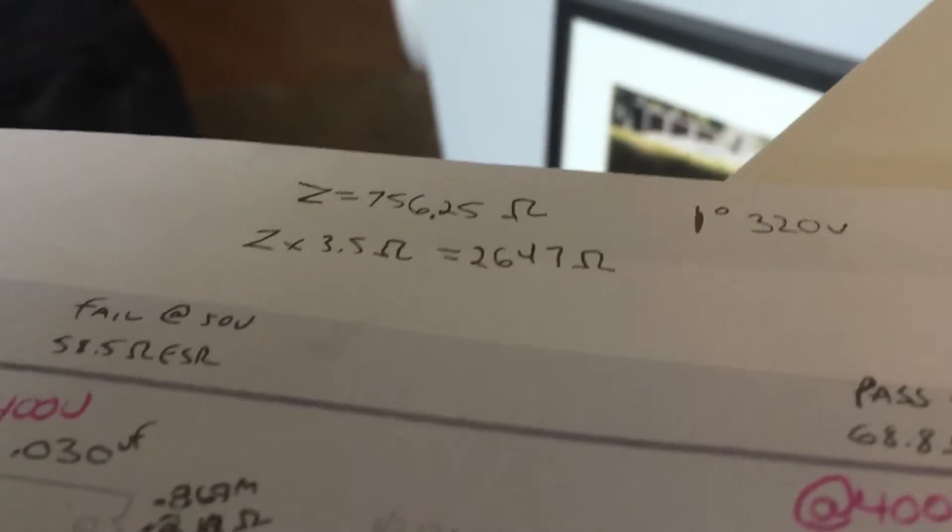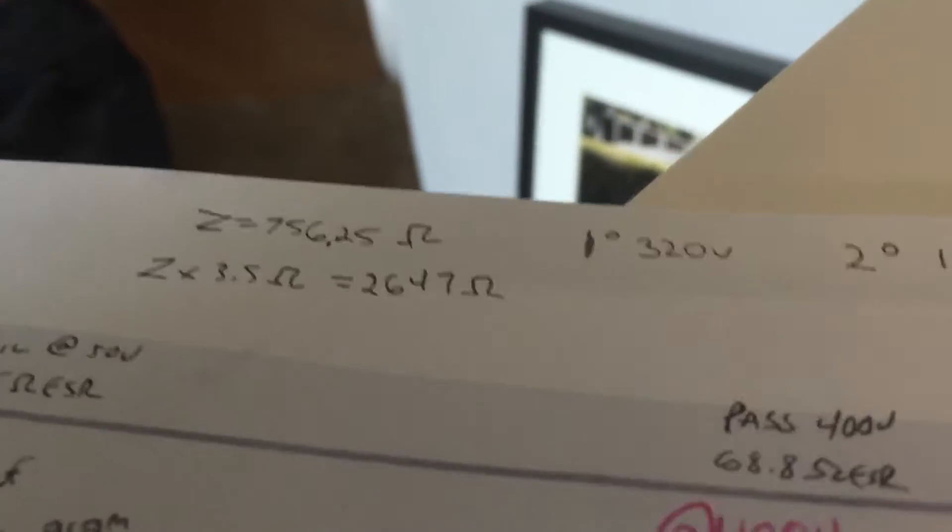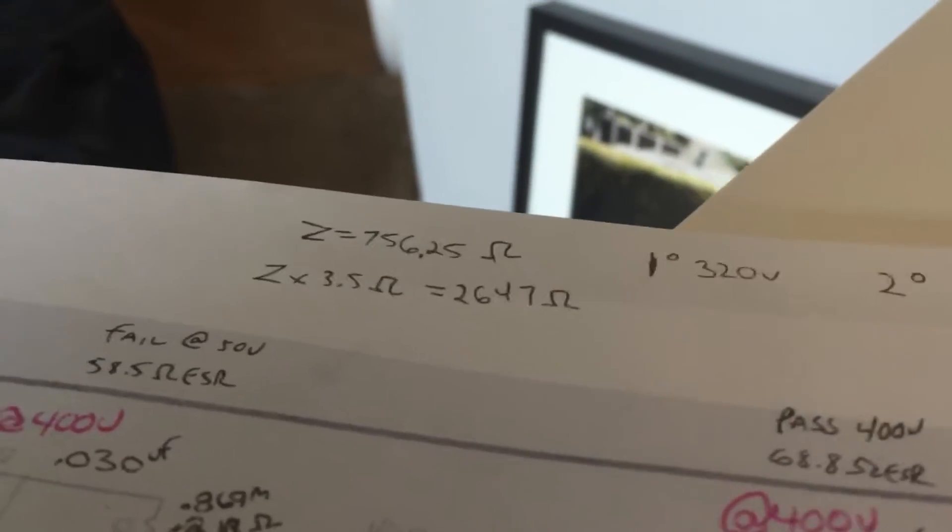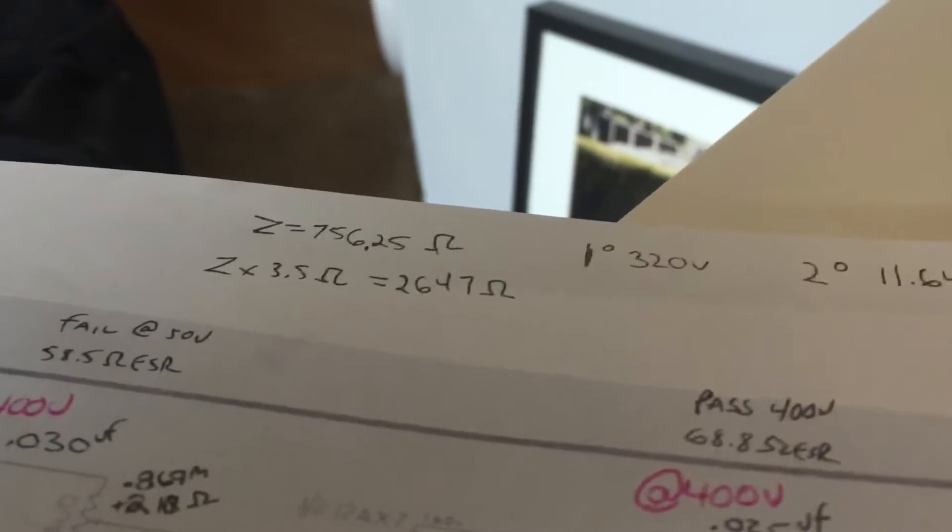I then multiplied that by the speaker resistance and ended up with 2,647 ohms. If you look at the recommended values for the plate resistance for a 6V6, you will find that it is 5,000 ohms. However,